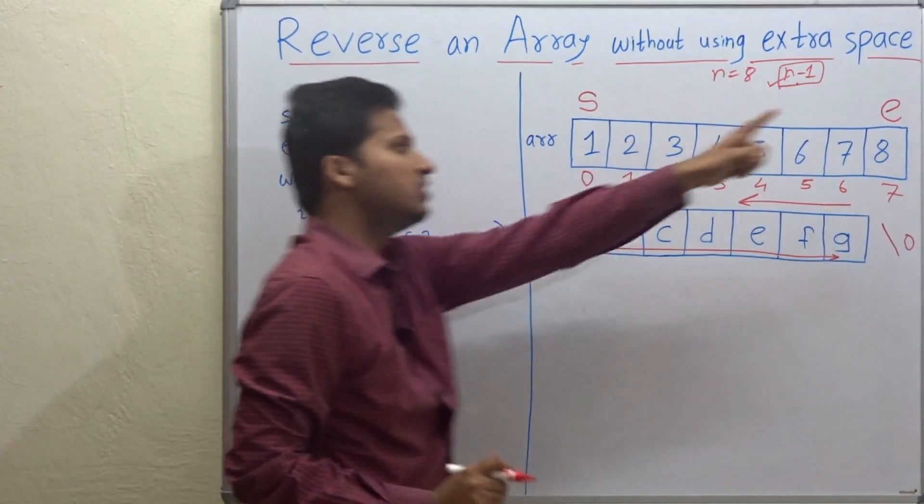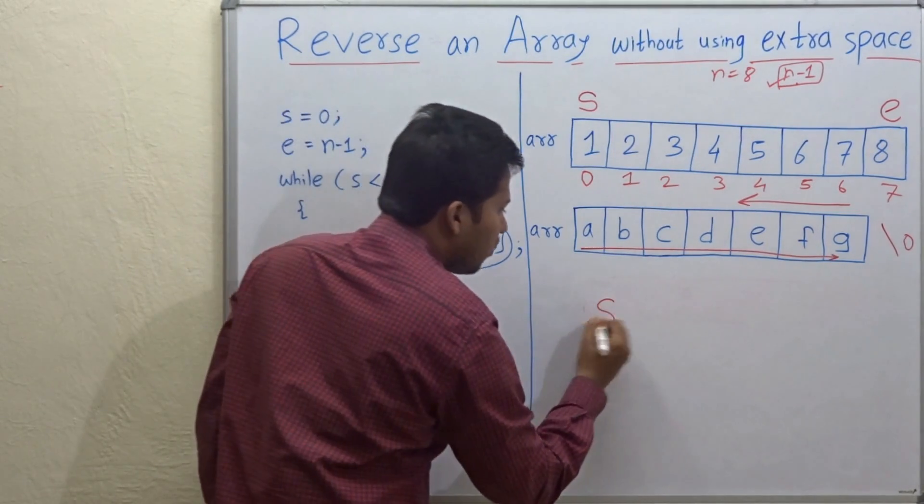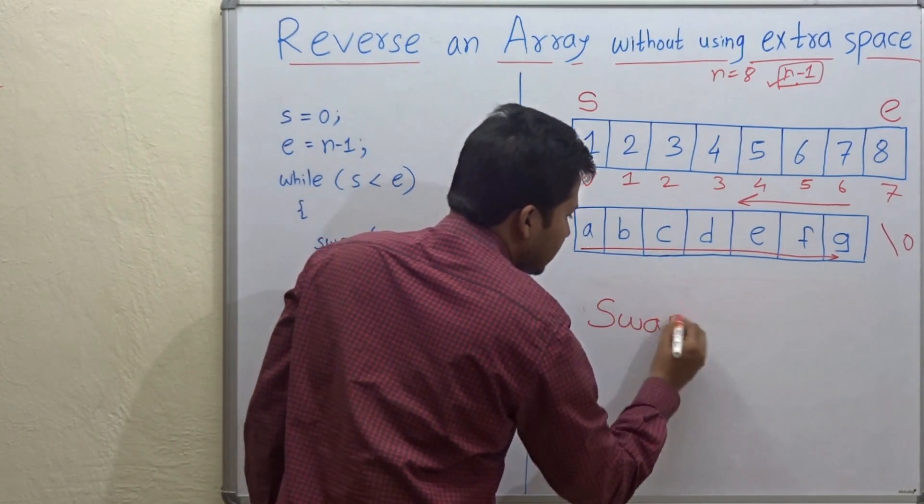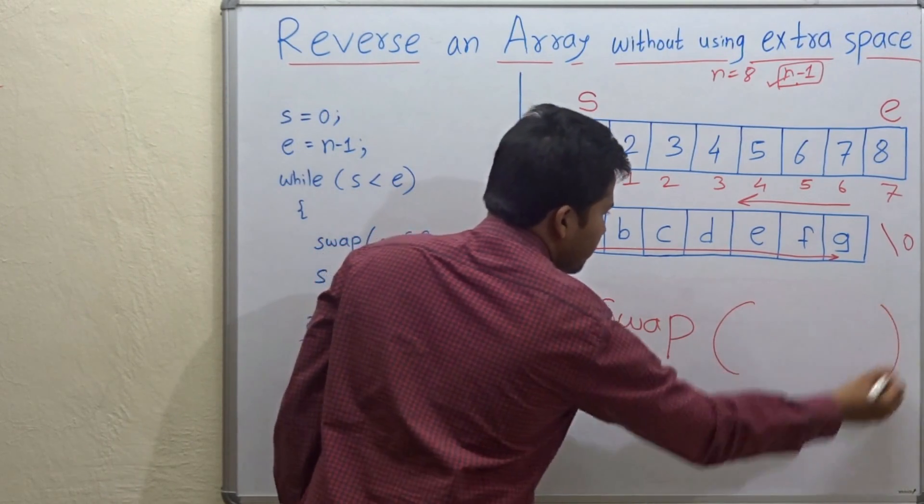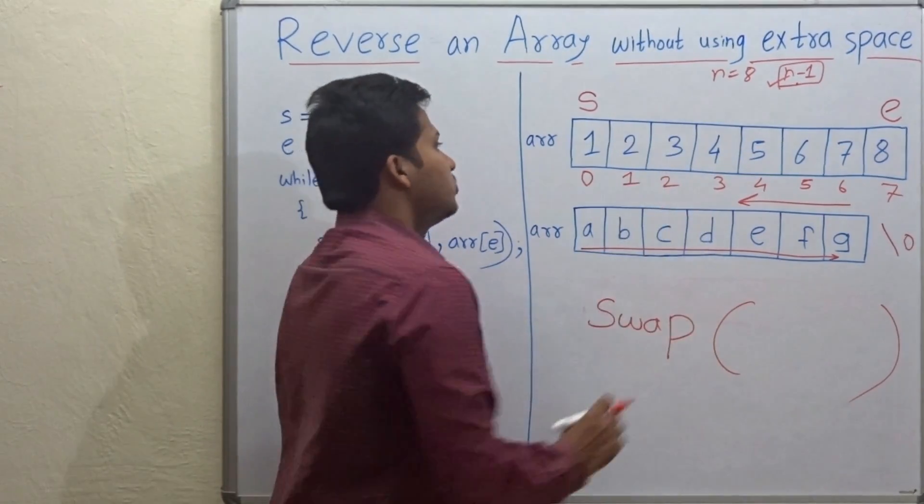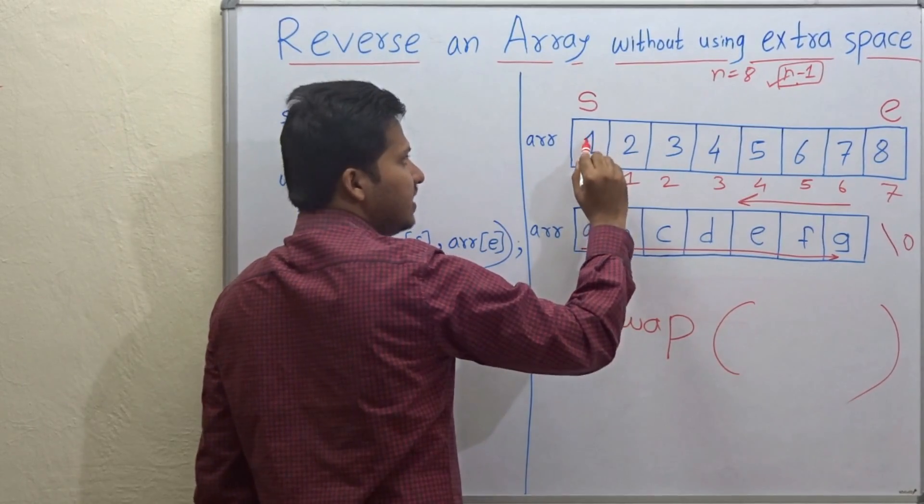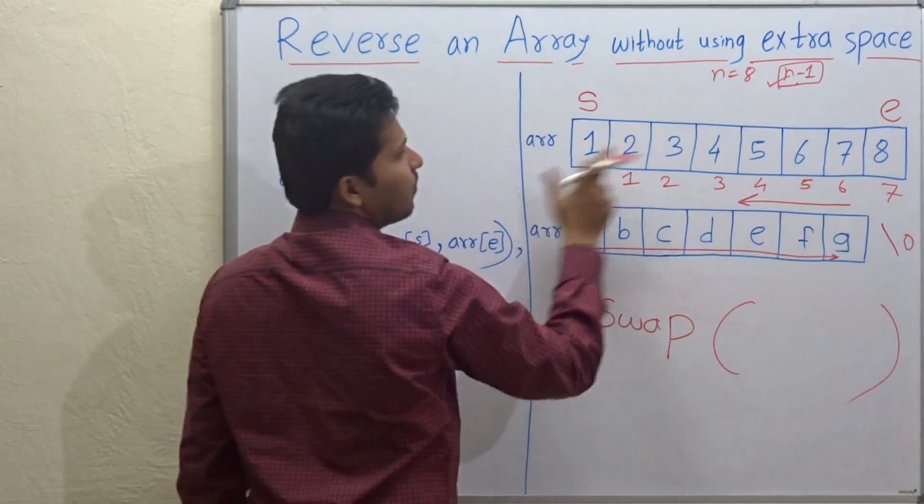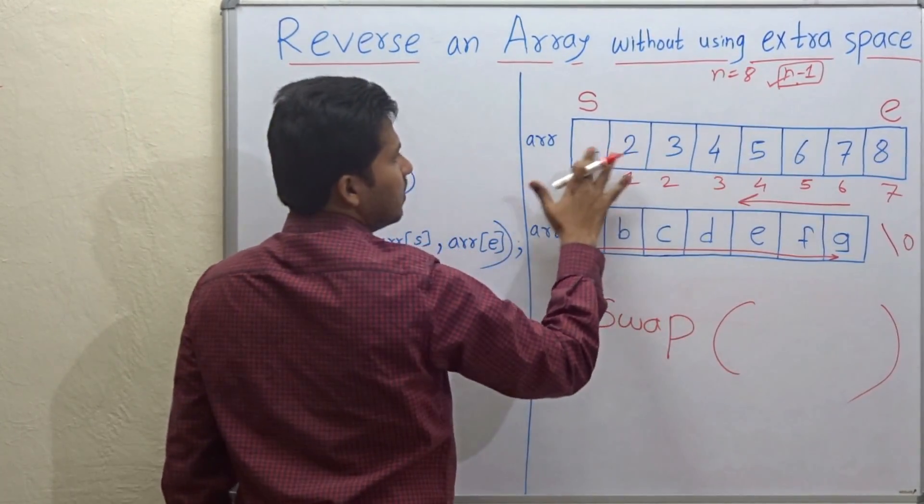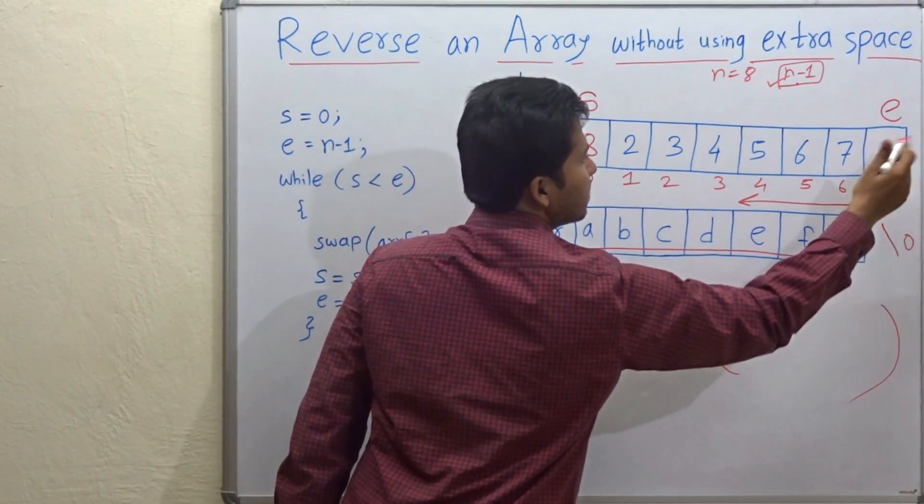So S is pointing to 0, E is pointing to 7. Here we are going to use an operation that is swap. We are going to swap the elements in the array. So first of all swap the starting element and the end element. So 1 and 8. So 8 comes here and 1 comes here.